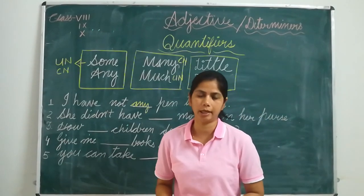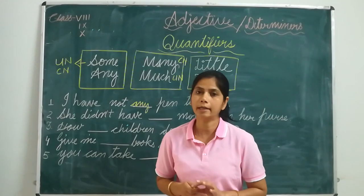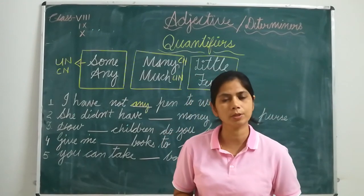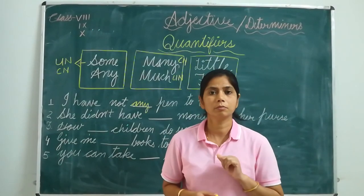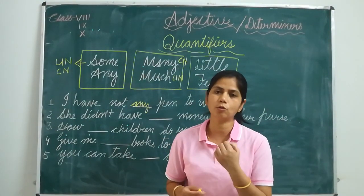It means you can say 1 book, 2 books. Can you say 1 water, 2 water? Is it possible to say it this way? No, because that is uncountable. Those nouns you cannot express as 1, 2, 3.